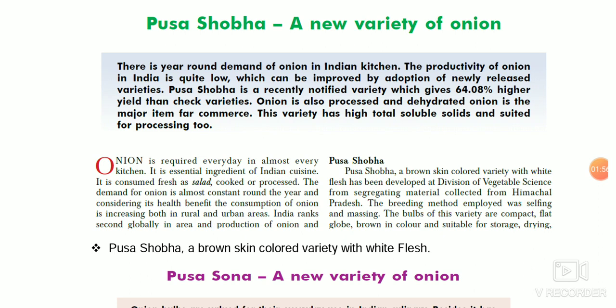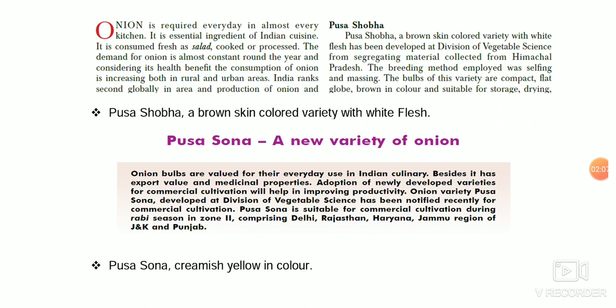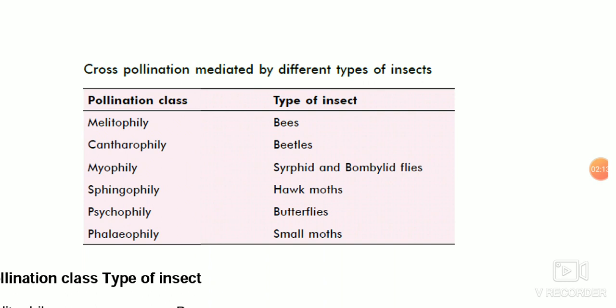Coming to the next, different onion varieties: Pusa Sobha has brown skin and white flesh and is used for dehydration purposes. In the case of Pusa Sona, it is creamish yellow in color.